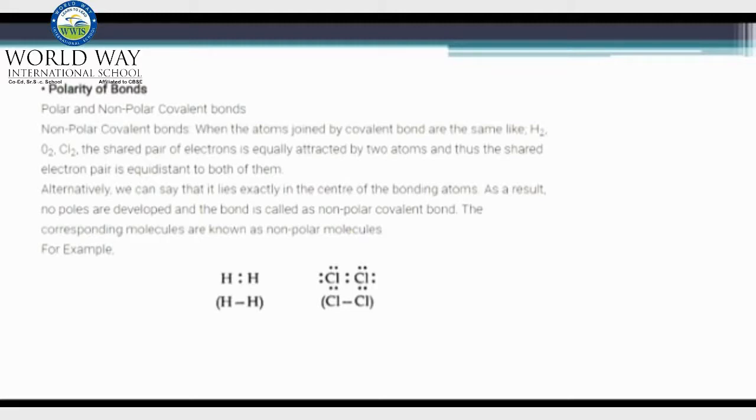Nonpolar covalent compounds. When the atoms joined by the covalent bond are the same, like hydrogen molecule, oxygen molecule, etc., then the shared pair of electrons are equally distributed and attracted by the two atoms, and thus the shared electron pair is at equal distance between both of them. So we can say that they lie exactly in the center of the bonding atoms, due to which no poles are generated.